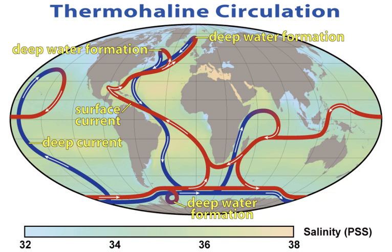The dense water masses that sink into the deep basins are formed in quite specific areas of the North Atlantic and the Southern Ocean. In the North Atlantic, seawater at the surface of the ocean is intensely cooled by the wind and low ambient air temperatures. Wind moving over the water also produces a great deal of evaporation, leading to a decrease in temperature called evaporative cooling, related to latent heat. Evaporation removes only water molecules, resulting in an increase in the salinity of the seawater left behind.